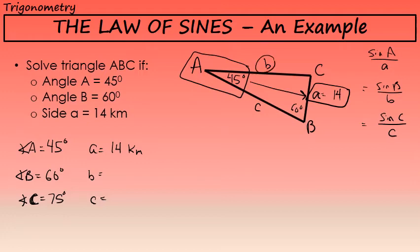Let's start by finding side b. I already know angle A is 45 and side a is 14, and that will be part of my equation when I find side b and side c. The sine of 45 over 14 equals the sine of angle B, which is 60 degrees, over the length of side b, which is what I'm trying to find.